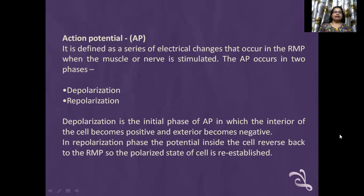Action potential is defined as a series of electrical changes that occur in the RMP when the muscle or nerve is stimulated. The action potential occurs in two phases: depolarization and repolarization. Depolarization is the initial phase in which the interior of the cell becomes positive and exterior becomes negative. In repolarization phase, the potential inside the cell is reversed back to the RMP, so the polarized state of the cell is re-established.